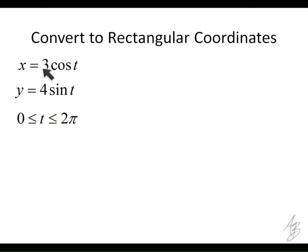Let's think about this. The x values now, since cosine goes anywhere from negative 1 to 1, then 3 times that is going to go anywhere from negative 3 to 3. So our x values are going to vary. They're going to range from negative 3 to 3.